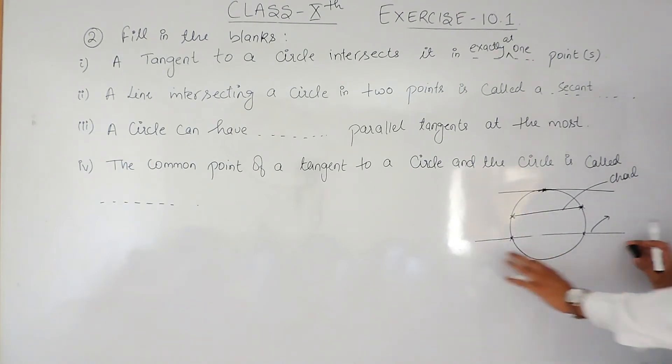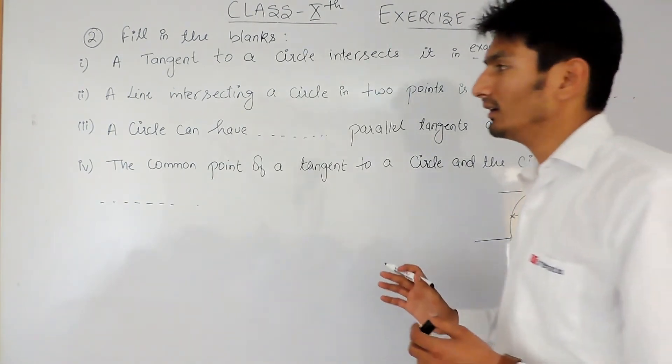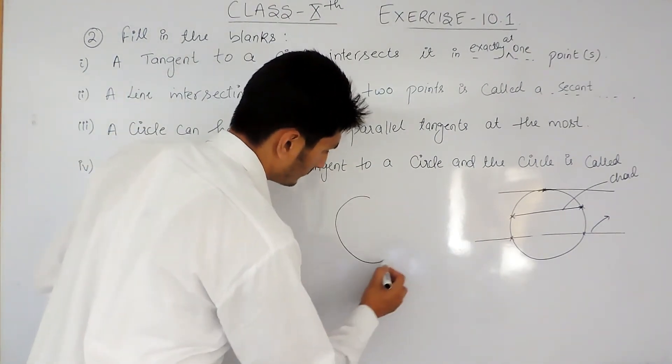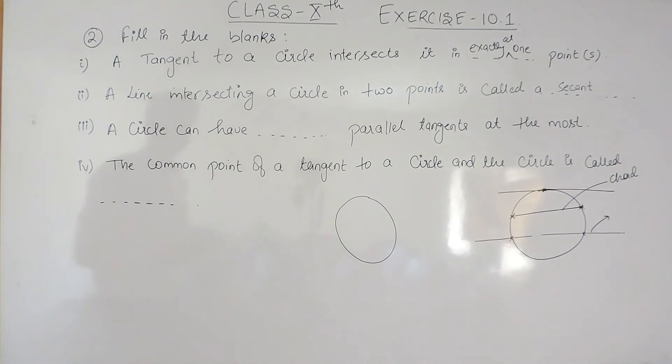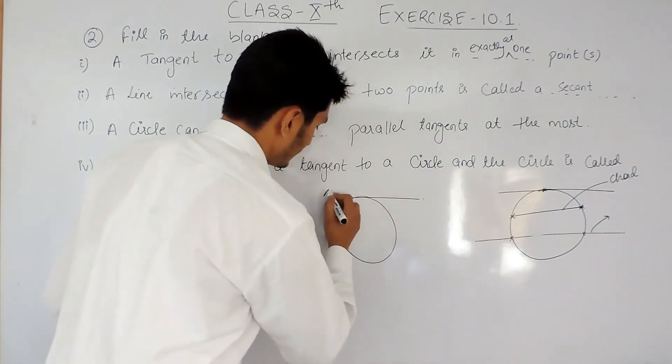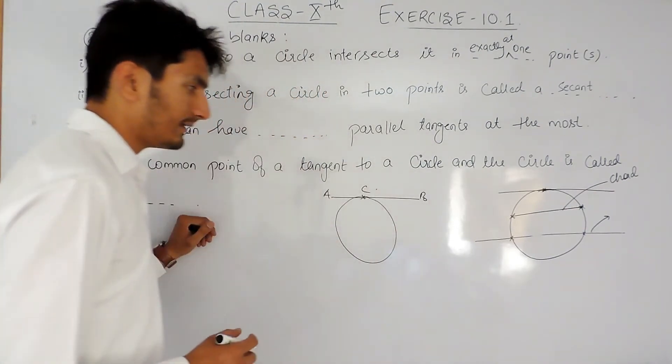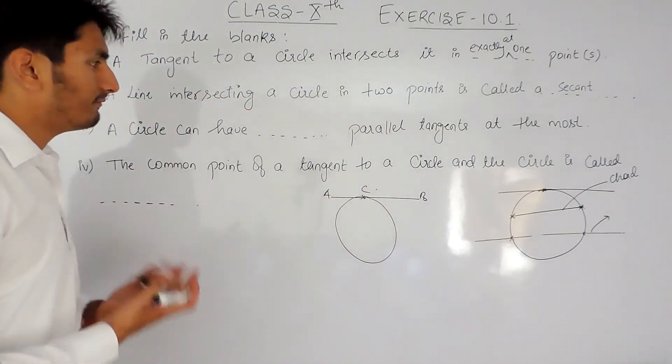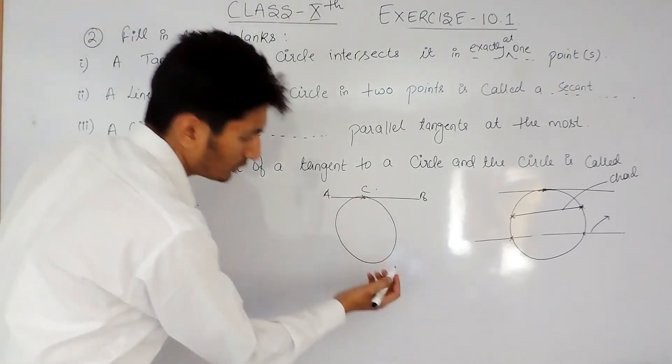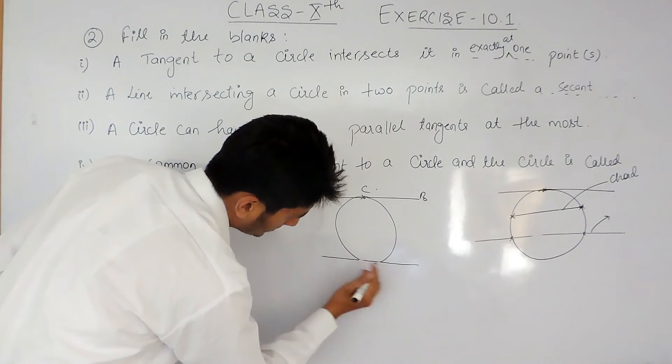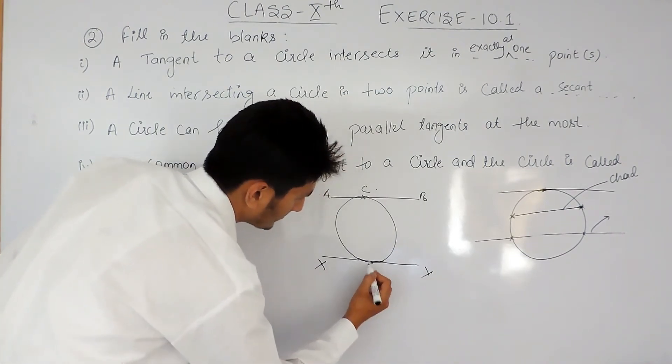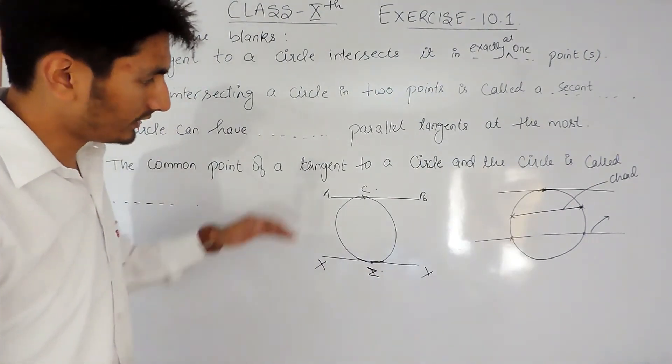Now the third part: a circle can have _____ parallel tangents at the most. If I draw a circle and let's say AB is a tangent intersecting at C, there is only one possibility for a tangent parallel to this one. When another tangent XY is drawn with intersecting point Z, only these two tangents will be parallel.